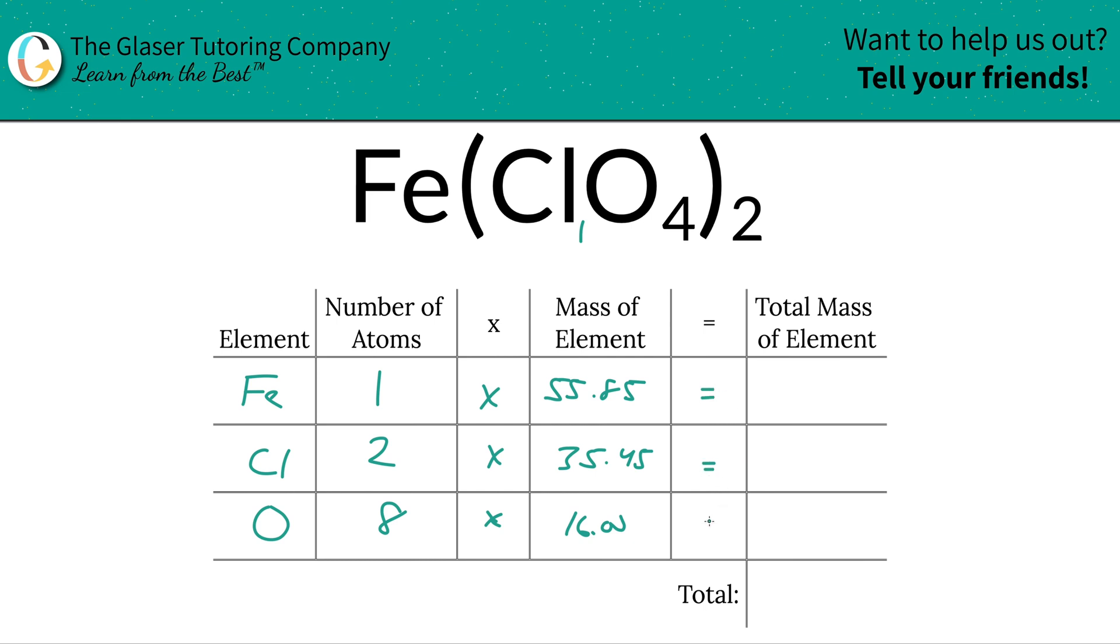Then we're going to find the total mass of each element in the compound. We're just going to simply multiply the row across. So the total mass of iron here, since there's only one atom, it's 55.85. For chlorine, this is going to be 70.9. And then for oxygen, it's going to be 128.